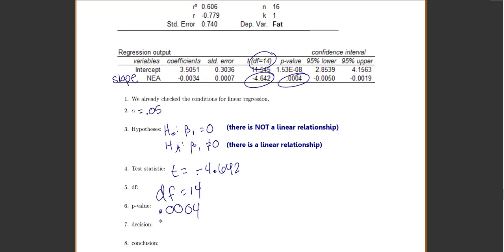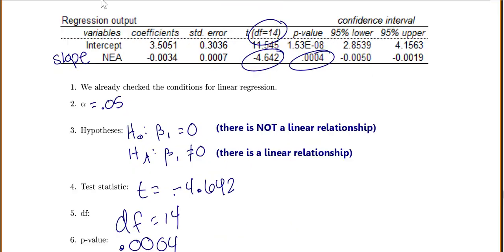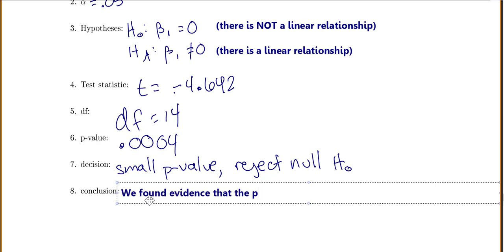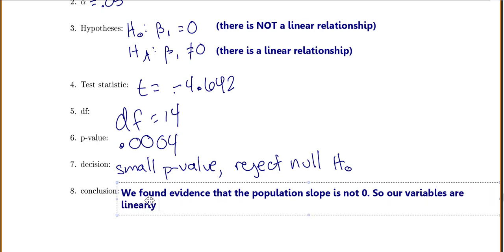For my decision, that's a small p-value. So I will reject my null hypothesis. For my conclusion then, I would say that we found evidence that the population slope is not 0. So our variables are linearly associated.